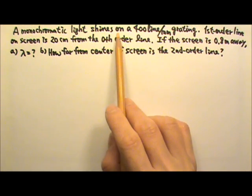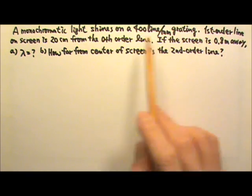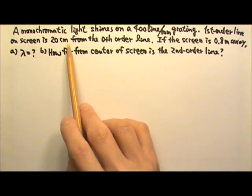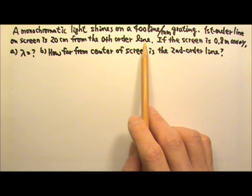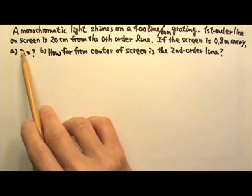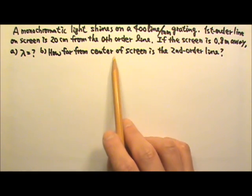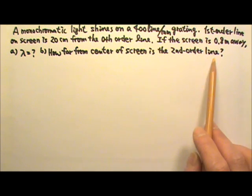A monochromatic light shines on a 400 line per mm grating. The first order line on the screen is 20 cm from the zeroth order line. If the screen is 0.8 m away from the grating, A. What is the wavelength of the light? B. How far from the center of the screen is the second order line?